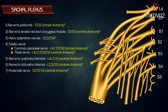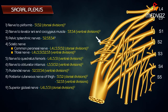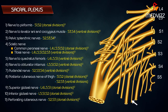The posterior cutaneous nerve of the thigh is formed from dorsal divisions of S1 and S2 combined with ventral divisions of S2 and S3. The superior gluteal nerve arises from dorsal divisions of L4, L5, and S1. The inferior gluteal nerve arises from dorsal divisions of L5, S1, and S2. The perforating cutaneous nerve arises from dorsal divisions of S2 and S3. This completes the root values for all branches of the sacral plexus.